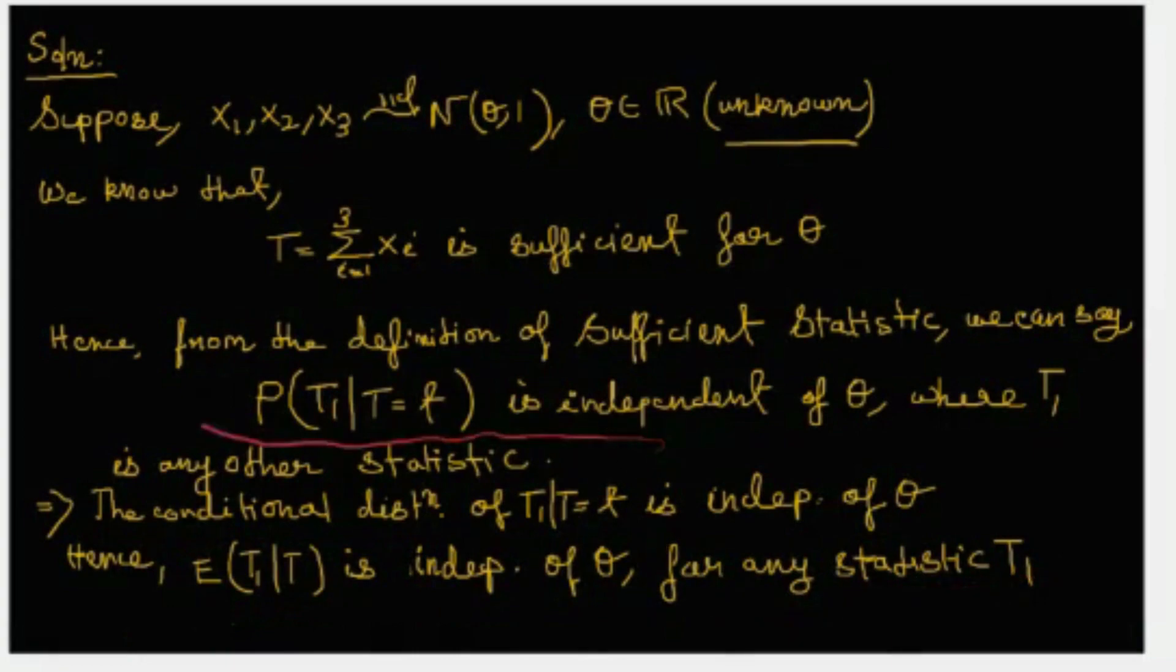This follows directly from the concept of sufficient statistic that for any sufficient statistic T, the conditional distribution of T1 given T will be independent of θ where T1 is any other statistic, hence its expectation will be independent of θ also.